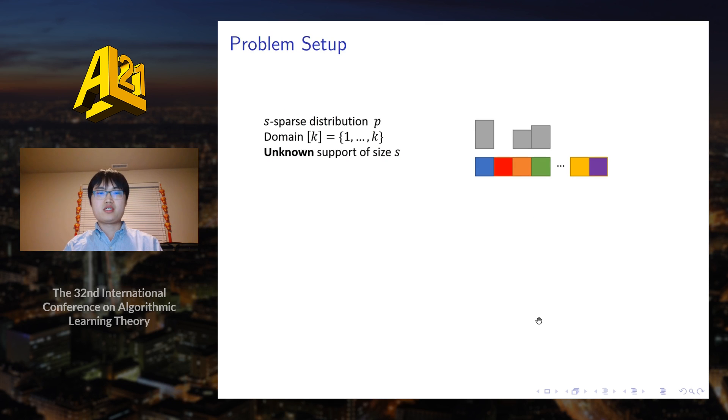Therefore, we wish to characterize the learning performance when the data is sparse. The problem that we are considering is the discrete distribution estimation problem. There's an S-sparse distribution P over a domain of size K. By S-sparse, we mean that the distribution has strictly positive probability mass on a set of size S and zero everywhere else.